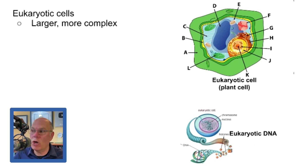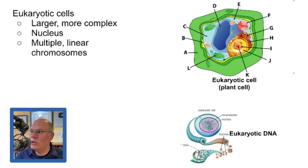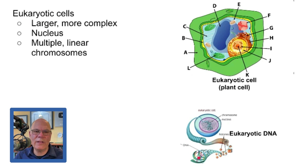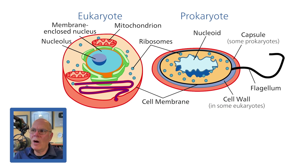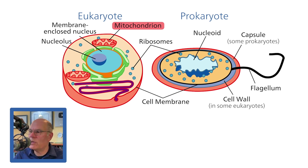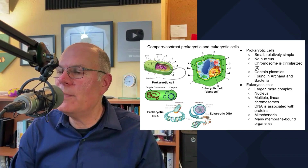Eukaryotic cells, by contrast, are larger and much more complex — the eukaryotic cell would dwarf the prokaryotic cell. Eukaryotic cells have a nucleus and multiple linear chromosomes, meaning there's one end and another end. Their DNA is associated with proteins and they have mitochondria. Mitochondria are really what define eukaryotic cells — eukaryotic cells only exist because of mitochondria, though they're also distinguished by their nucleus and other features. Eukaryotic cells have many organelles — specialized parts surrounded by a membrane.